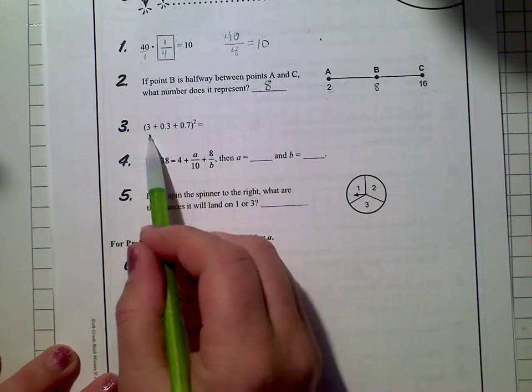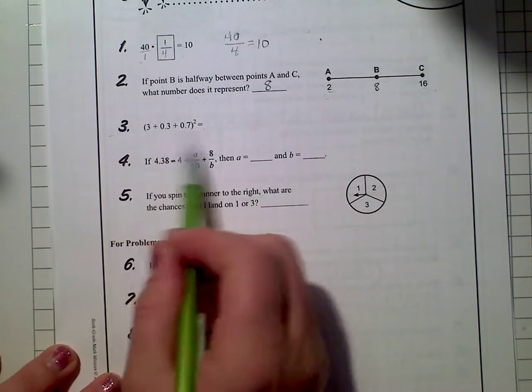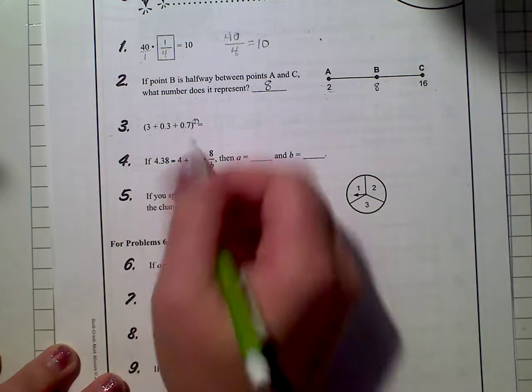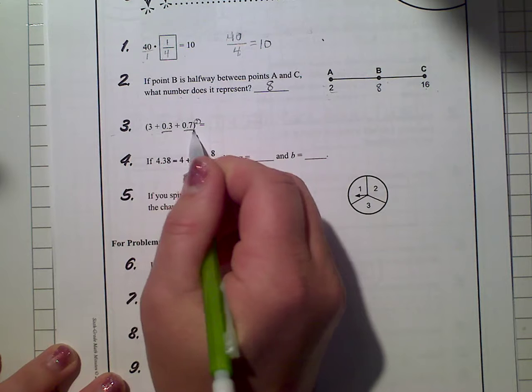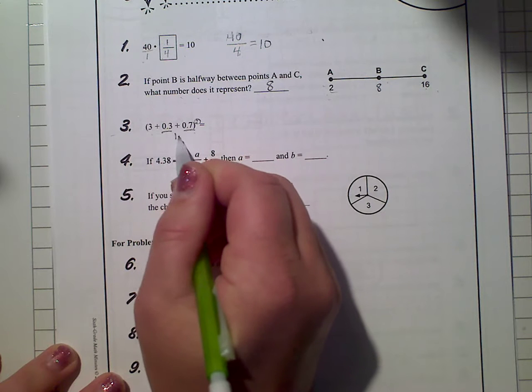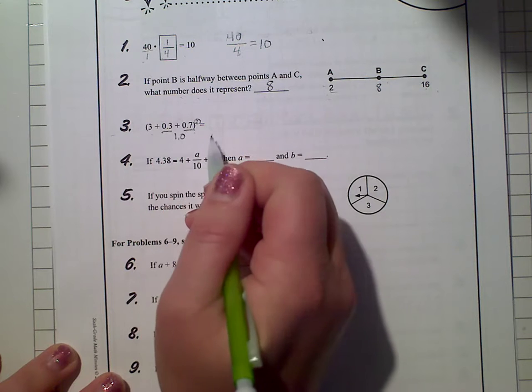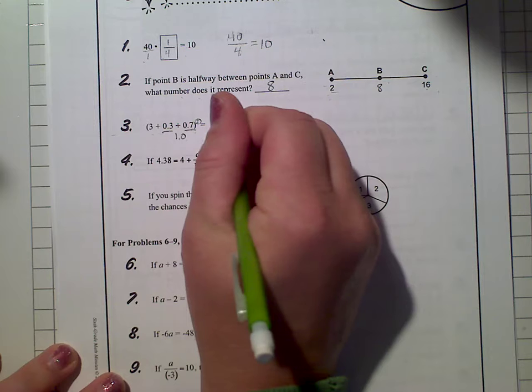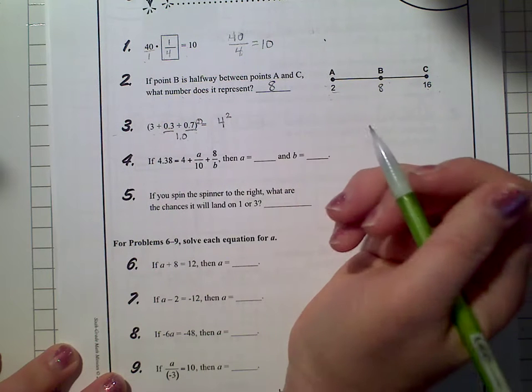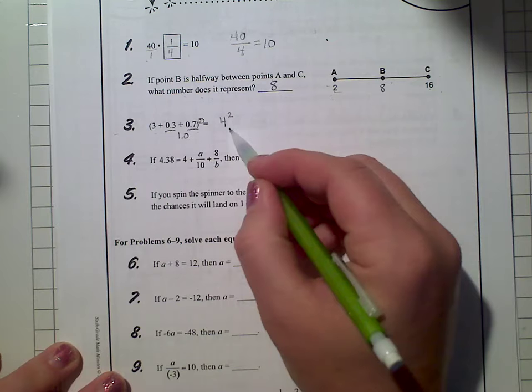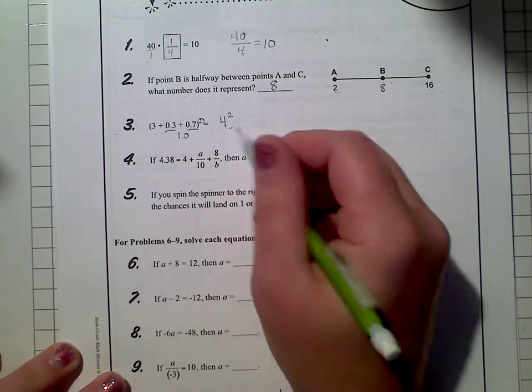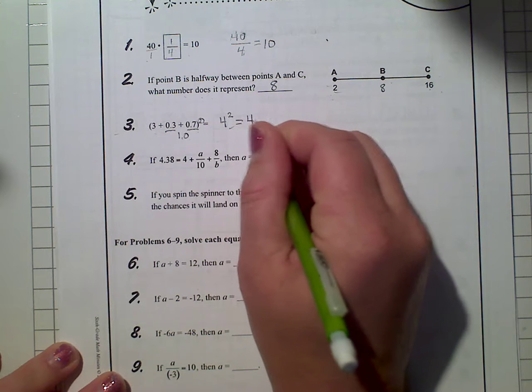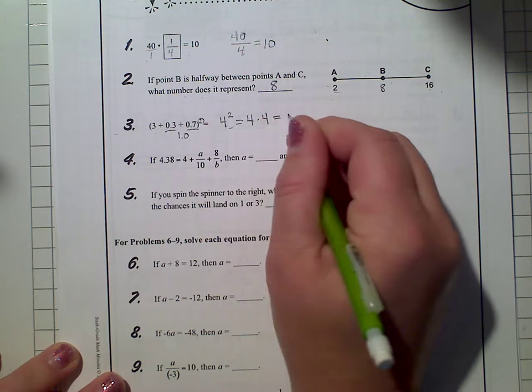This is number 3, order of operations. The exponents is going to be critical, so you're going to add the inside. I'm going to add these two decimals, this is 30 cents and 70 cents, which would get you to a dollar. If you have a dollar and add it to $3, you would get $4. Then they want you to square that. Do not get confused that this is not 4 centimeters squared, this is 4 squared. That means 4 squared equals 4 times 4, which is also equal to 16.